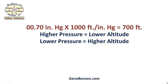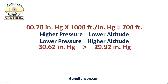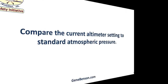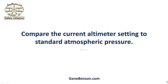But is it higher or lower? Recall that higher pressure is found at lower altitudes. So in our example, our altimeter setting was higher than standard, so our pressure altitude will be lower than field elevation. Therefore, we subtract the 700 feet from our field elevation of 1,800 feet and determine that our pressure altitude is 1,100 feet.